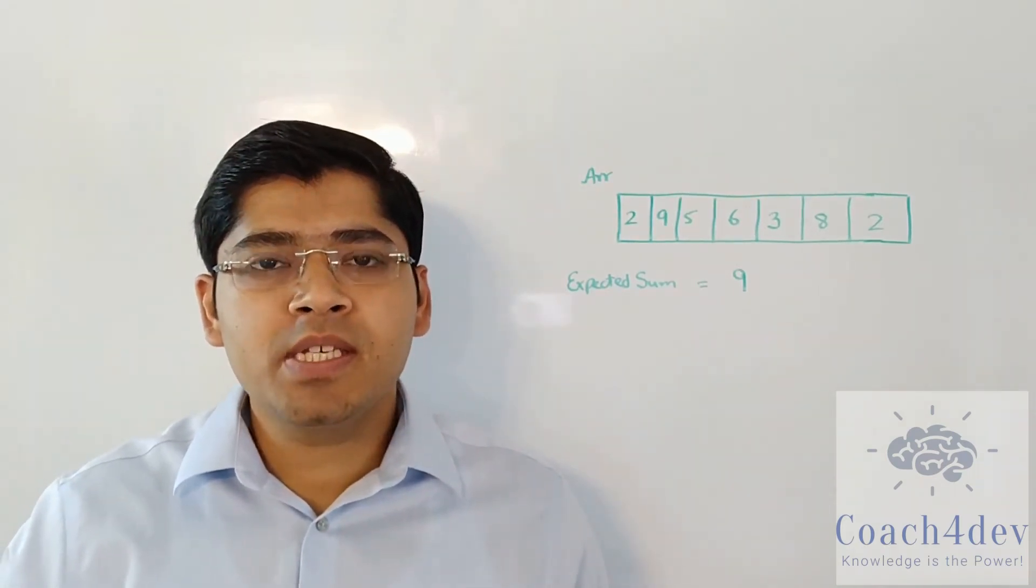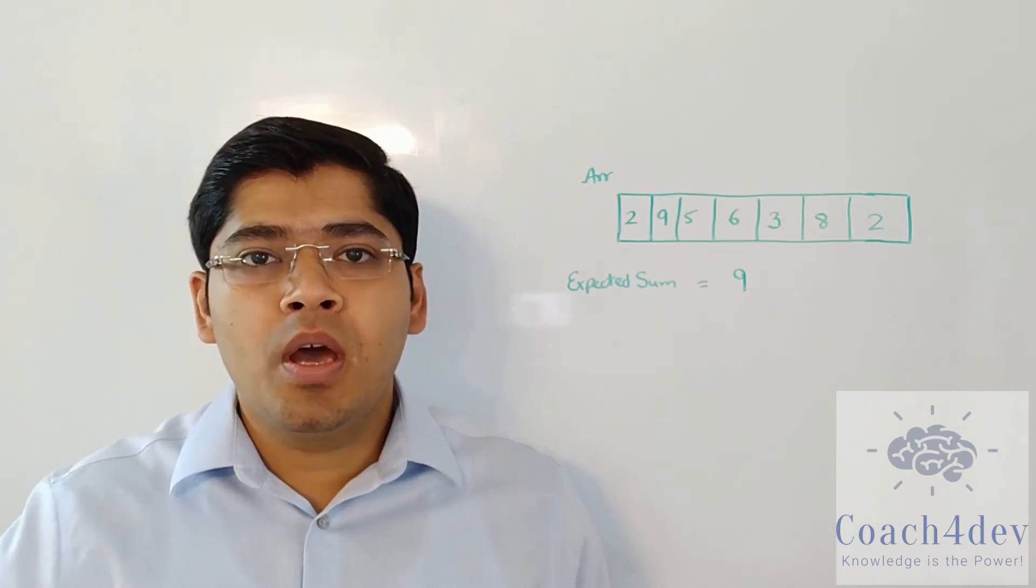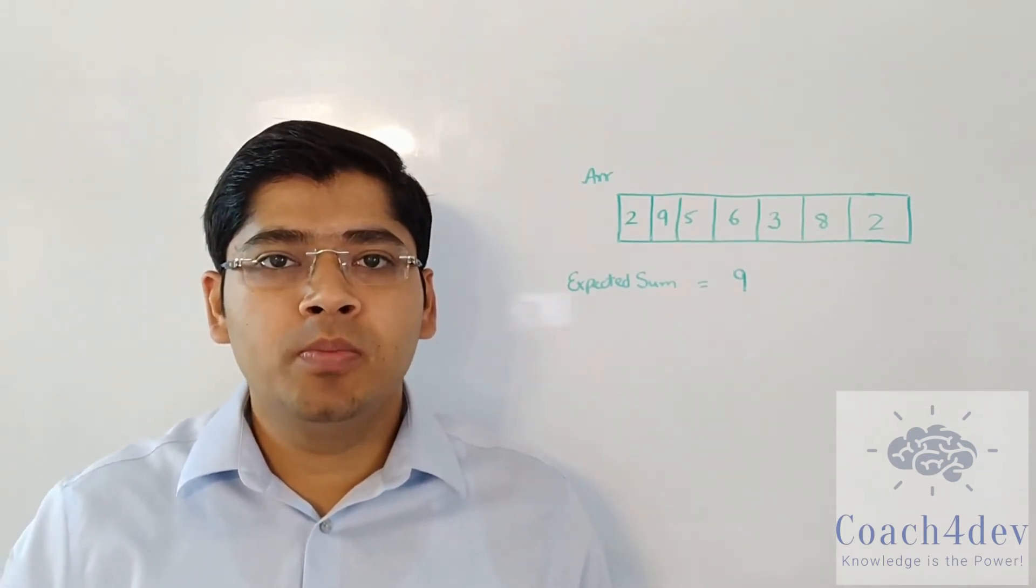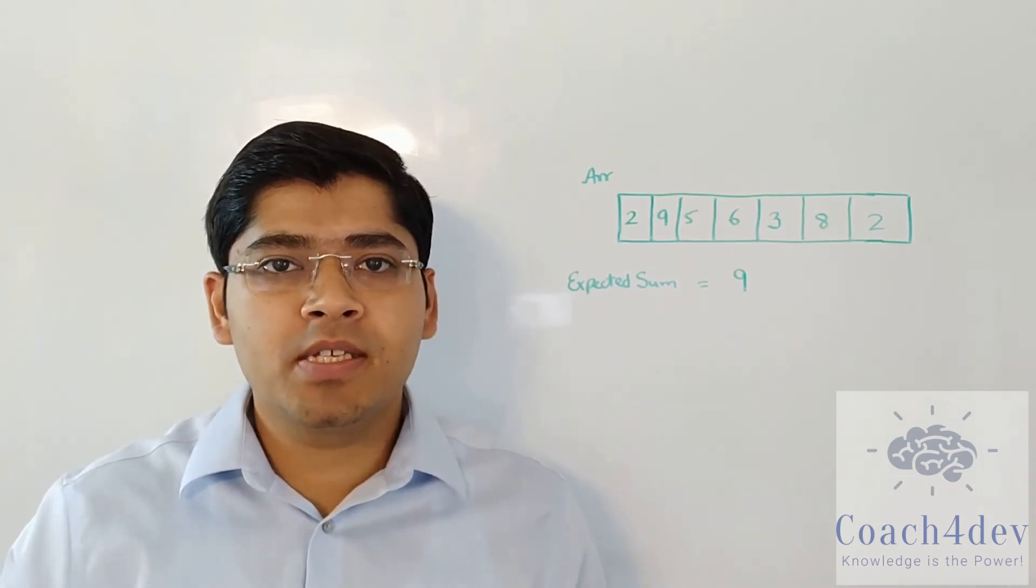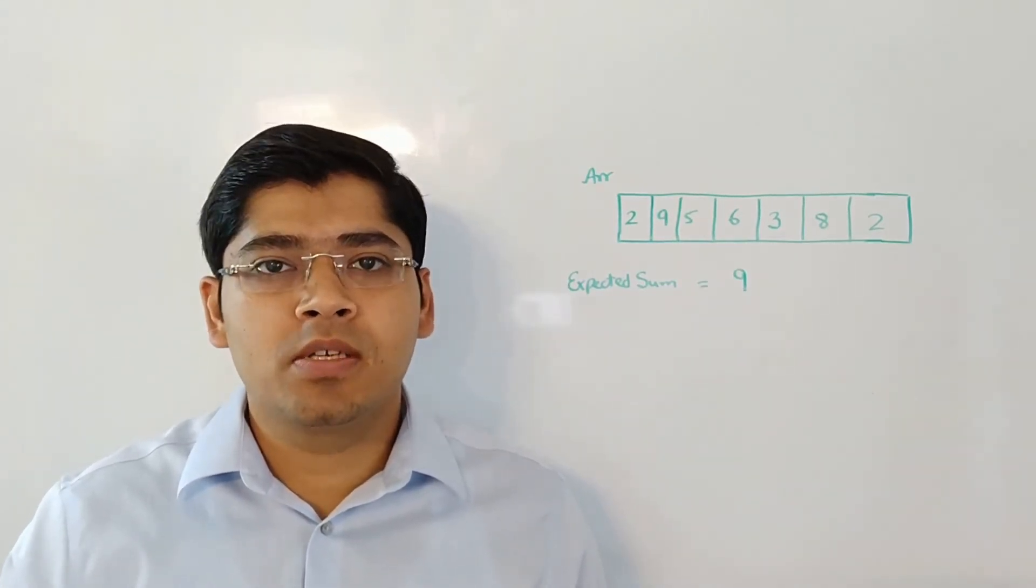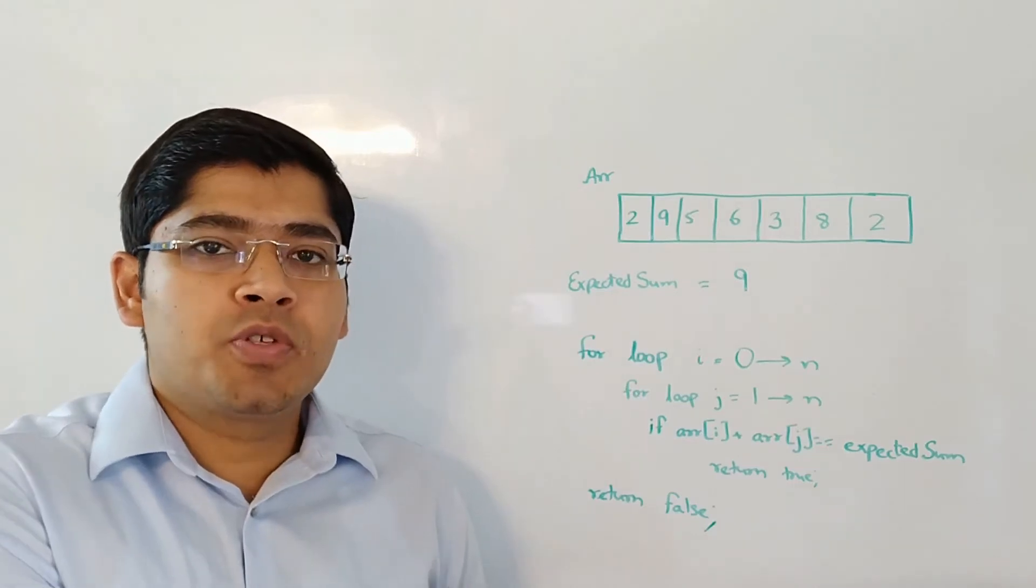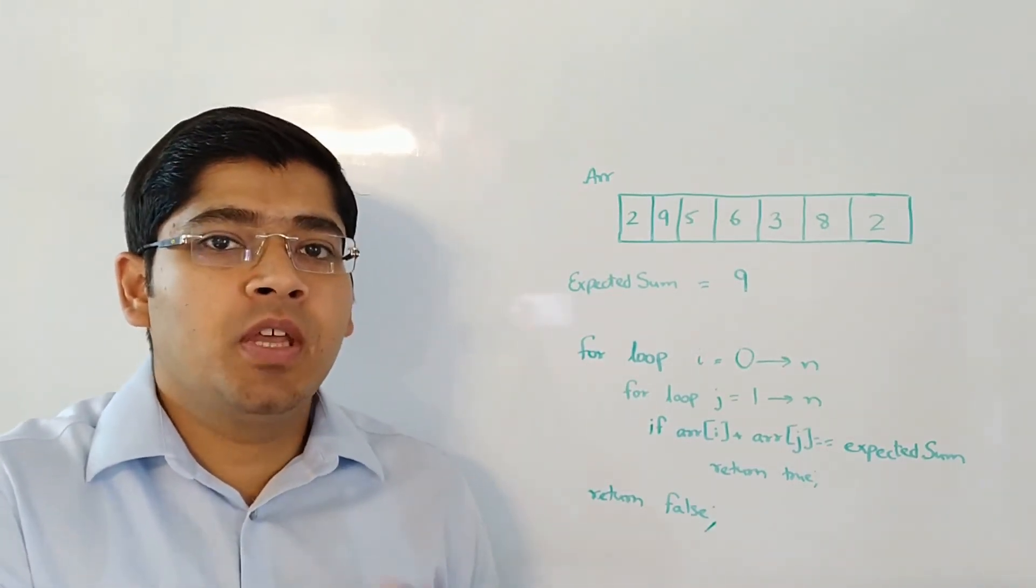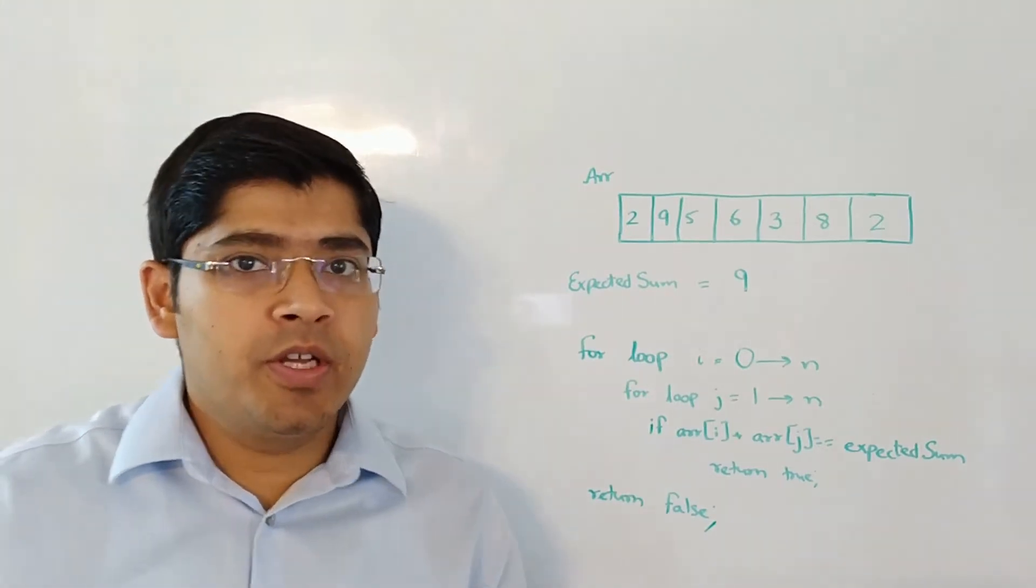If such a pair exists, we can return true. Otherwise, at the end of the two for loops, we can assume that such a pair does not exist and we can return false. Here is the pseudo code of the solution that I just mentioned. Now I will be posting the actual code in the video description itself.